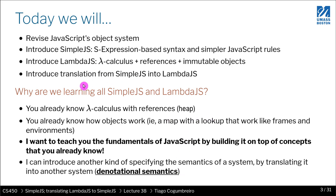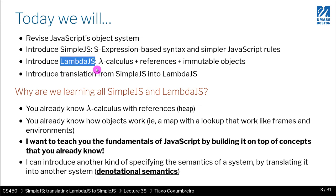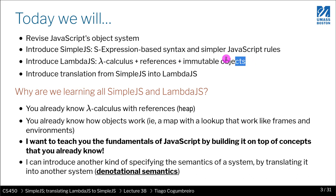So today we're going to revisit JavaScript's object system, and then we're going to talk about SimpleJS, which is a way to make very concrete what subset of JavaScript we're interested in. This will use an S-expression-based syntax so that we can manipulate it using Racket. Then we're going to introduce LambdaJS, which is a formalism very close to what you've learned — lambda calculus, references, and immutable objects.